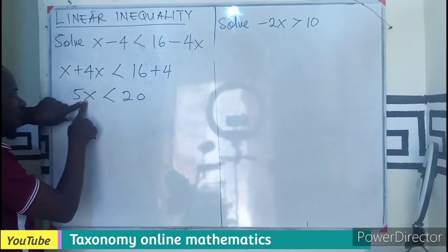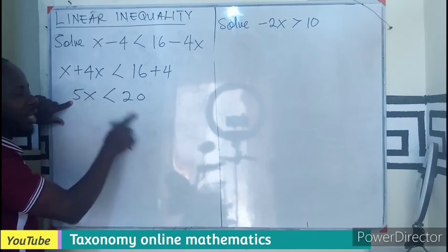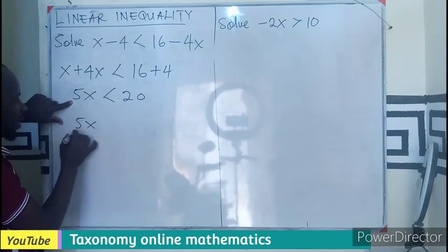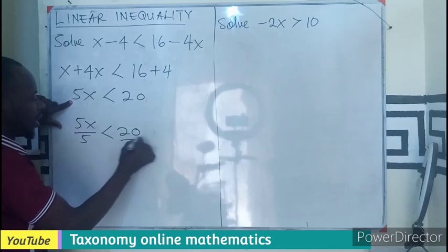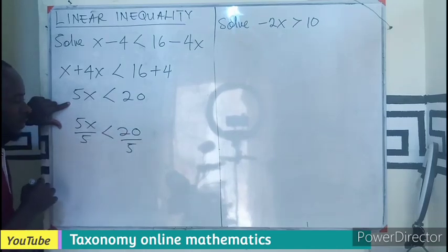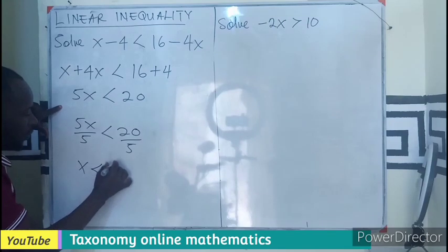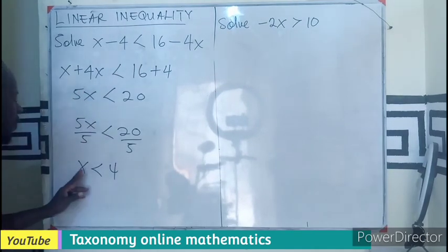We also know that our attention is on the x, so whatever coefficient is attached to the x will have to be used to divide both sides in order to clear it from here. So that becomes 5x divided by the coefficient, less than 20 divided by the same coefficient. And that leaves us with x < 4.